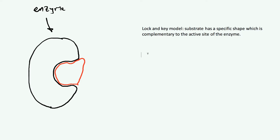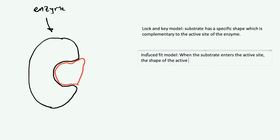In reality, it's not quite that simple. The model which is more accepted is called the induced fit model. The induced fit model says that when the substrate enters the active site, the shape is still important — they do have a complementary shape — but the shape of the active site changes slightly to better, or tighter, fit the substrate. The substrate kind of fits in, but the fact that the substrate is in the active site causes the active site itself to change shape. The folds change shape to lock the substrate in place, hugging it, giving an even better fit before the reaction occurs.